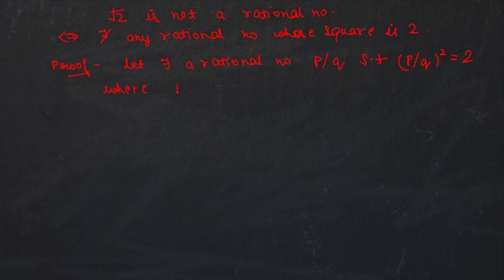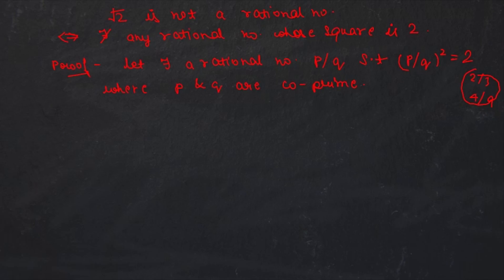In this assumption, p and q are co-prime, meaning they share no common factor other than 1 (like 2/3 or 4/9). We may assume this without loss of generality, because if p and q had a common factor we could cancel it and still have a rational number p/q with (p/q)² = 2 and co-prime numerator and denominator.